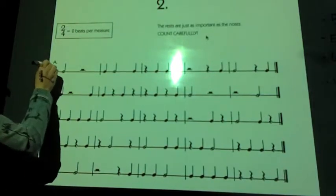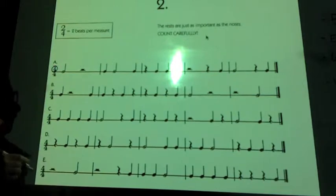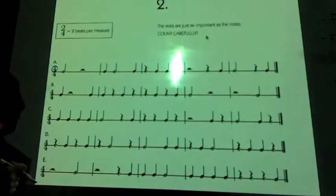First, look at your time signature. The four tells us there are four beats in each measure. We use numbers one through four in each measure.